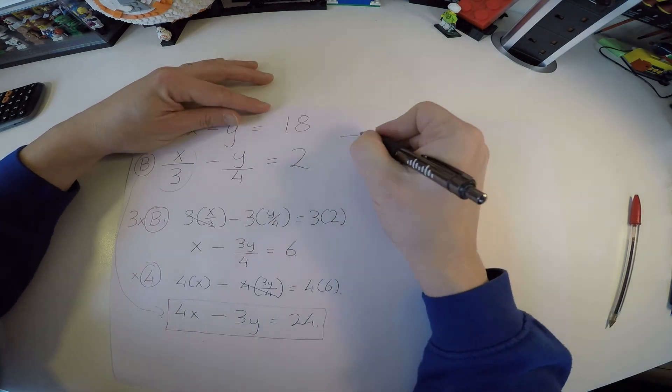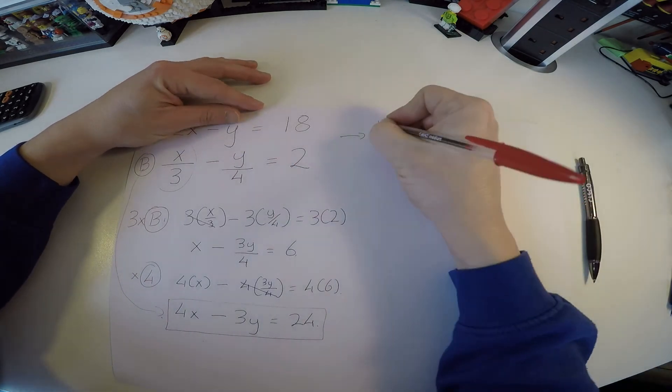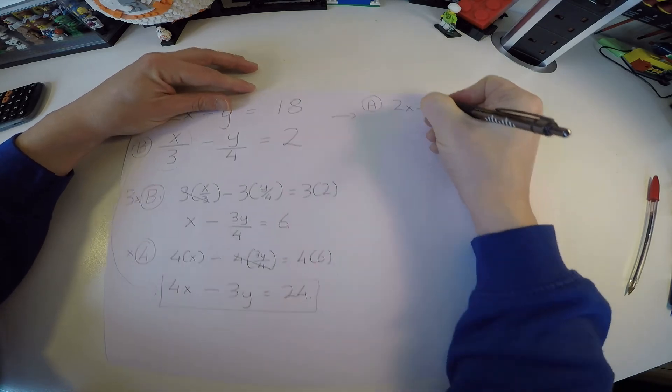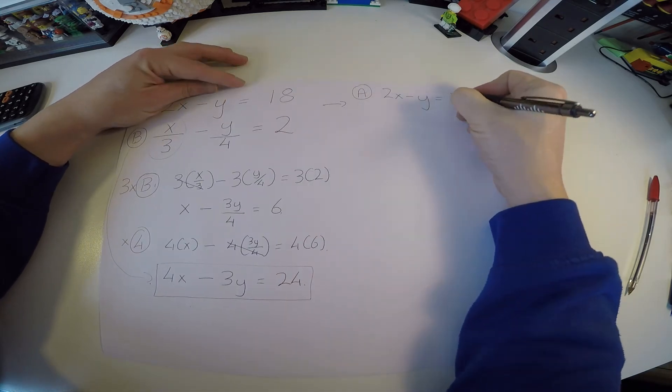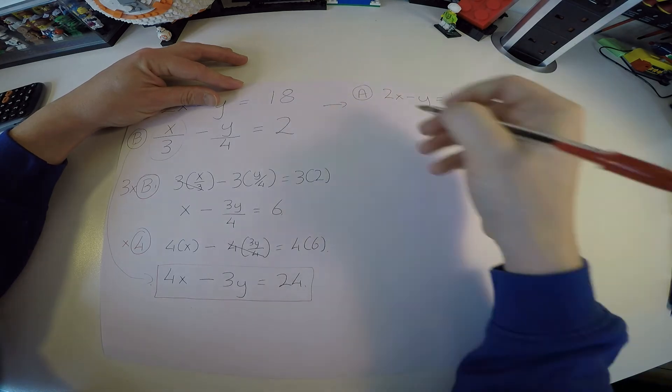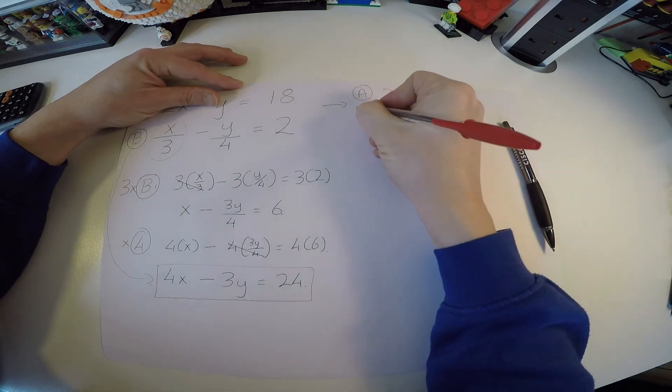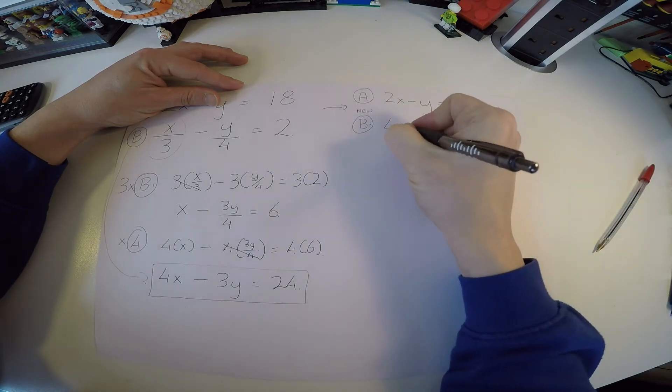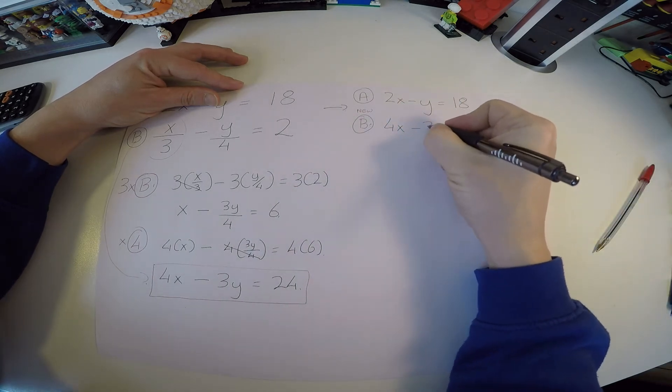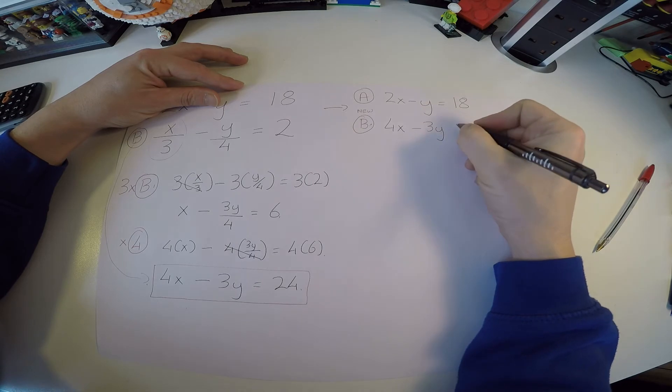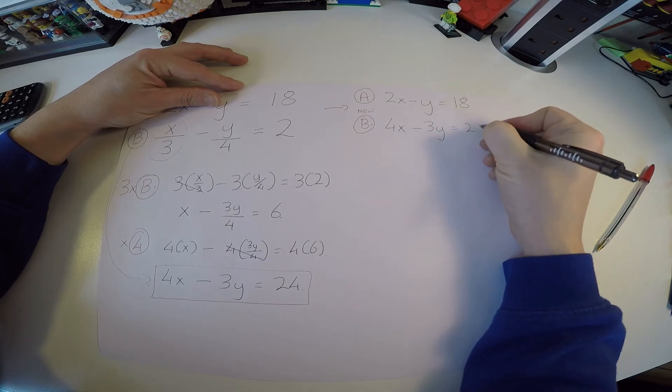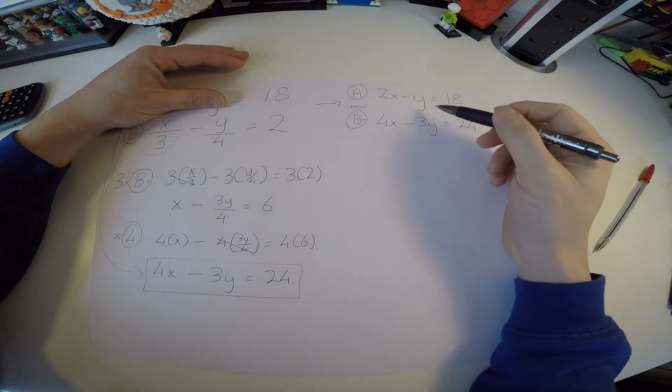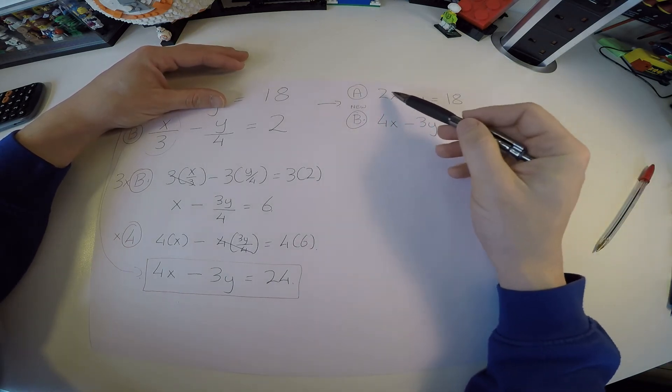So I've taken b from this down to an equation that we can use that has no fractions in it. So let's write them over here. a remained unchanged, so that's still 2x minus y is equal to 18. But our new b is actually 4x minus 3y equals 24. Now it becomes one of the other problems.